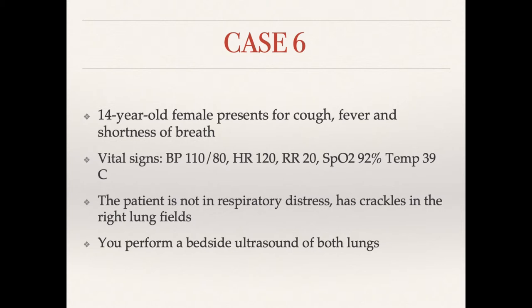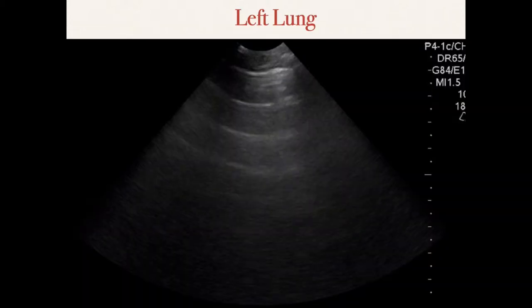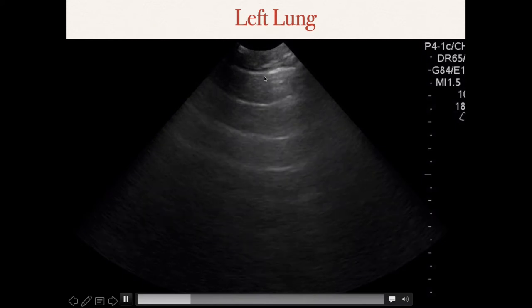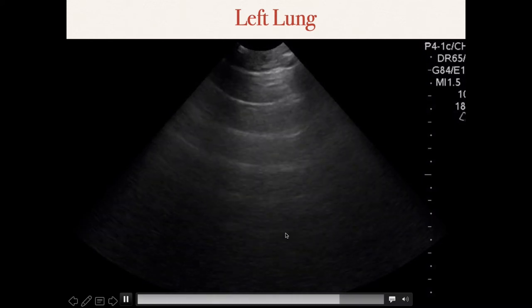Case number six: a 14-year-old female presents with cough, fever, and shortness of breath. Vital signs: blood pressure 110/80, heart rate 120, respiratory rate 20, oxygen saturation 92%, temp 39 degrees Celsius. The patient is not in respiratory distress and has crackles in the right lung fields. You perform bedside ultrasound of both lungs. Here's the left lung - using a curved probe with a lot of depth, looking for pleural sliding. There is sliding and many A-lines - that nice reverberation artifact with sliding usually means a normal-looking lung.